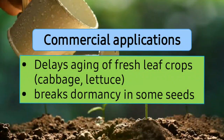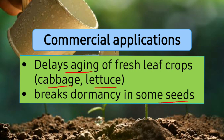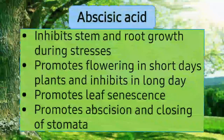Commercially, cytokinins are important because they delay the aging of fresh leaf crops such as cabbage and lettuce. Just as gibberellins delay ripening in bananas, cytokinins delay the aging — the process of spoiling — in fresh leaf crops after they have ripened. They also break dormancy in some seeds, which makes them commercially important.